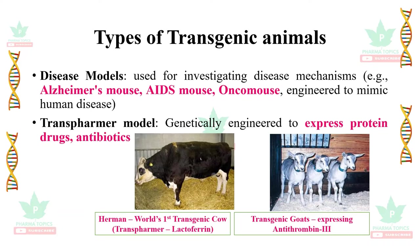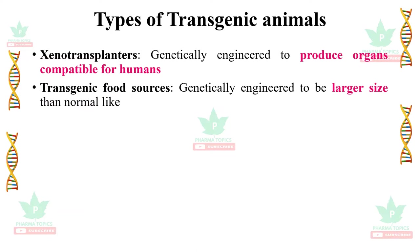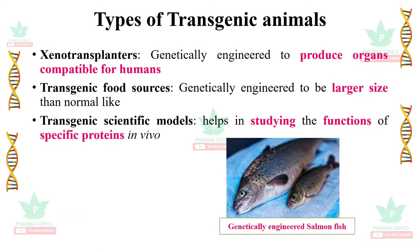An example is Hermann, the world's first transgenic cow, a transformer that expresses lactoferrin. Transgenic goats express antithrombin-3, used to digest unwanted clots in the human system. Xenotransplanters are genetically engineered to produce organs compatible to humans. Transgenic food sources are genetically engineered to be larger than normal — for example, the genetically engineered salmon fish compared to a normal fish.